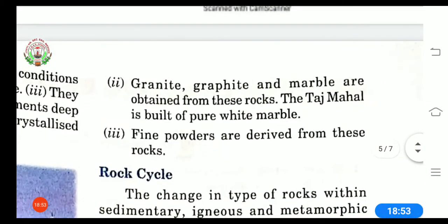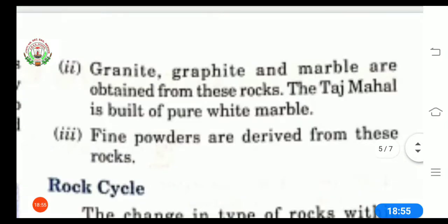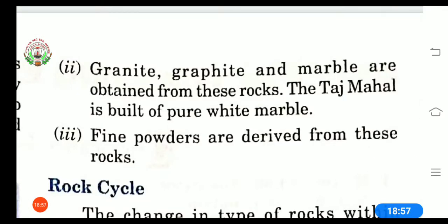Second is granite, graphite and marble are obtained from the roots of metamorphic rock. Taj Mahal is built of pure white marble. Taj Mahal is made of white marble and white marble is an example of metamorphic rock.